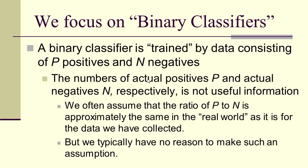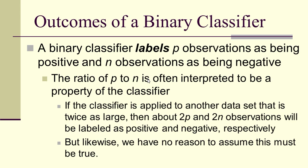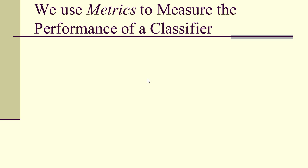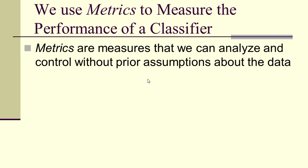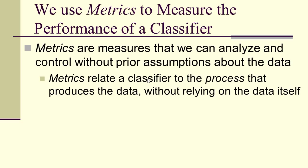A binary classifier is trained by data that is capital P positives and capital N negatives. These numbers are not really that important — they're a property of the data. Likewise, a binary classifier labels lowercase p observations as being positive and lowercase n observations as being negative. These are again properties of the data, and they're really not what we want to study. Metrics are measures we can analyze and control without any kind of assumptions about the data. They relate the classifier to the process from which the data came, without relying on the data itself.